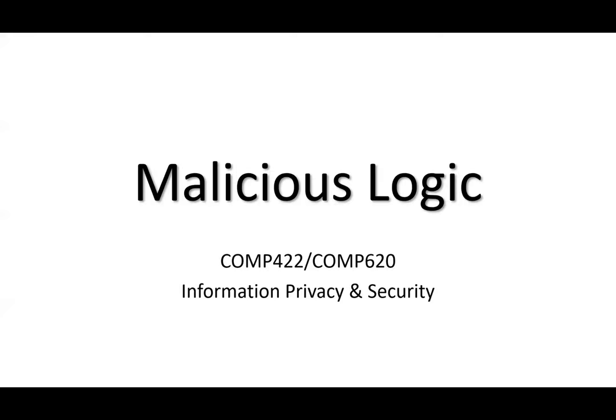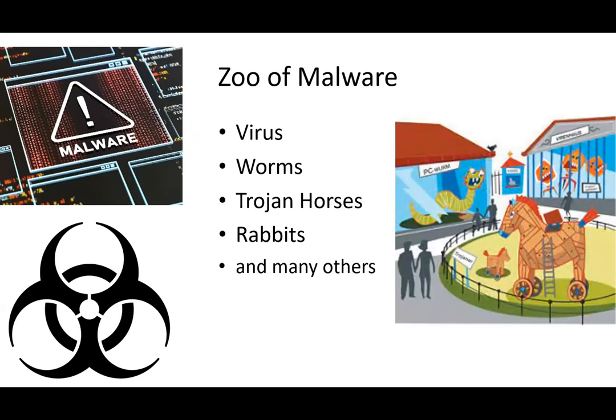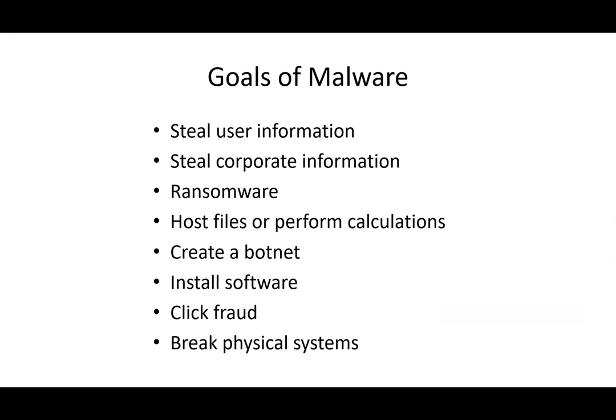This is COMP 422 and COMP 620, Information Privacy and Security. Today we're talking about malware — there's a whole bunch of malicious things out there: viruses, worms, Trojan horses, rabbits, and all sorts of things. My father helped make the biohazard symbol years ago.